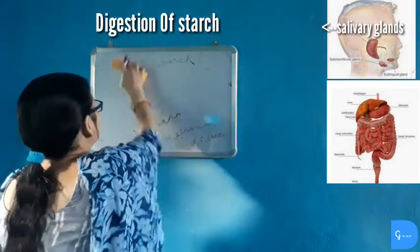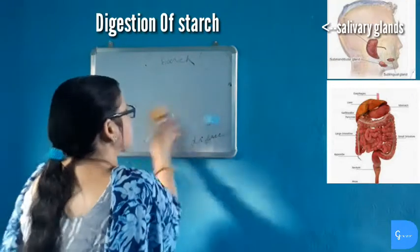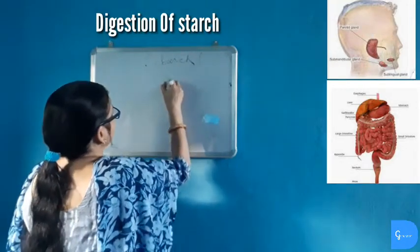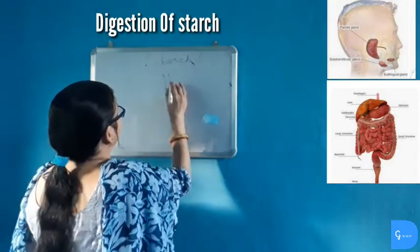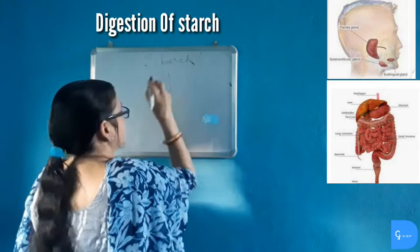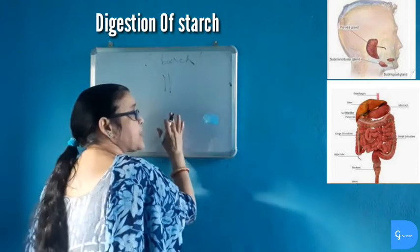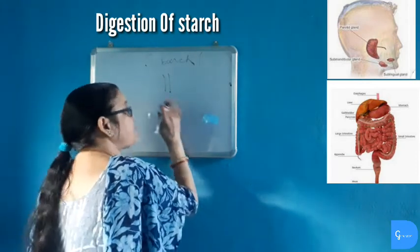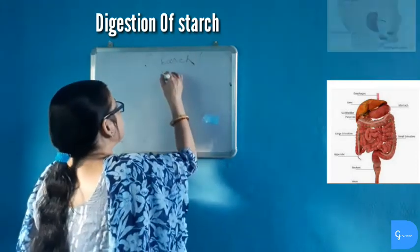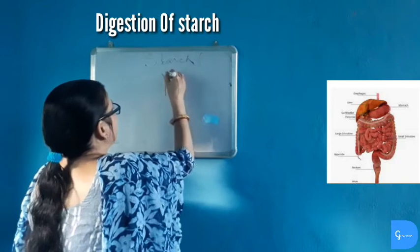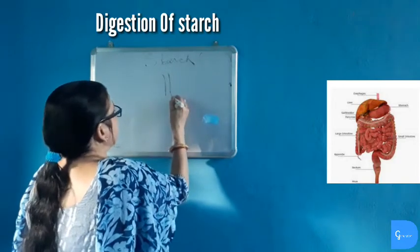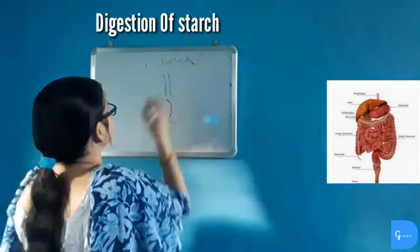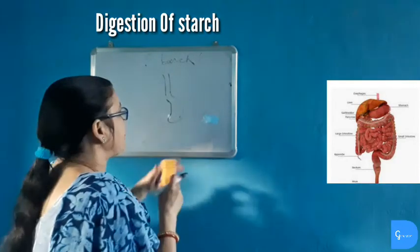Carbohydrate digestion starts from the mouth. From the mouth it goes to the esophagus. In the esophagus there is no digestive gland, and so no digestion of any food takes place. From the esophagus it is transferred to the stomach.